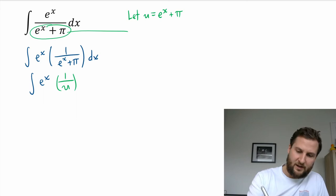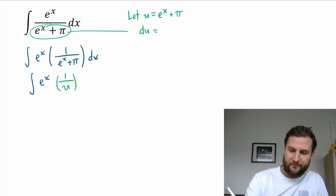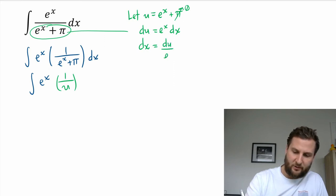And instead of dx what do I get? So let's keep going. Du - pi is just a number so that differentiates to zero - so I get e to the x dx, and then dx isolated is going to be du over e to the x.